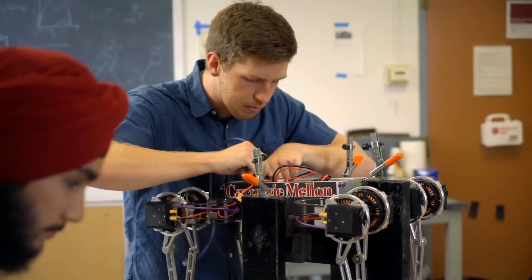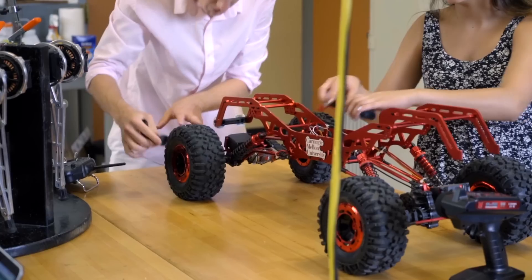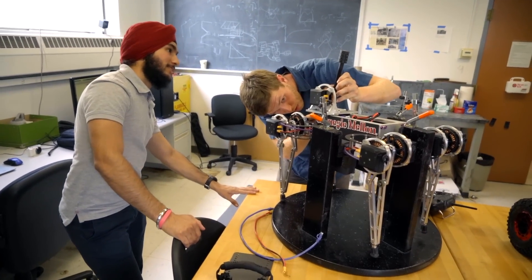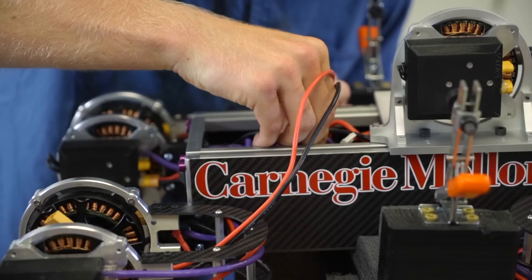My lab's name is the Robomechanics Lab, and that's because we study the mechanics of how robots interact with their environment. In this name, I chose to refer to the field of biomechanics, which studies the mechanics of biological systems. In our lab, we're looking at artificial systems, but we use a lot of the same tools and methods that biomechanics does.